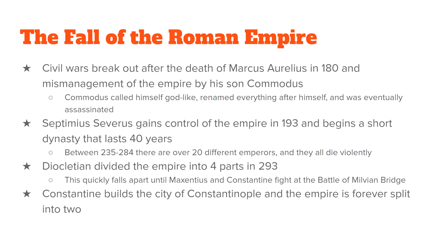In 293, the emperor Diocletian divided the empire into four parts, thinking that four smaller emperors working together would improve things. But that fell apart when Constantine and Maxentius had the Battle of the Milvian Bridge — which you'll read about this week. Finally, when Constantine took charge he built the city of Constantinople, and the empire was split into two. Eventually the Western Empire died off while the Eastern Empire survived and became known as something else, which we'll talk about later.